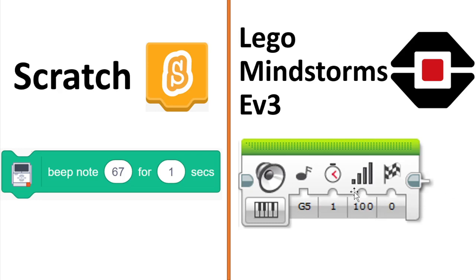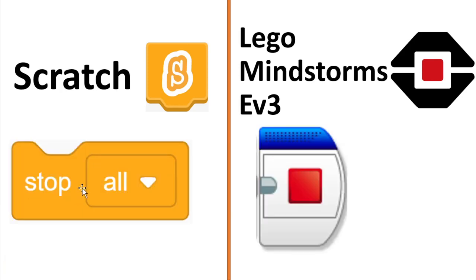My final example is the 'stop all' block on Scratch. You can use that in Control and just drag 'stop all' to the end of a script. In the LEGO Mindstorms EV3 app it's very similar — you drag a block to the end of the script and it will just stop everything. One difference is that in Scratch blocks move from top to bottom, but in the LEGO Mindstorms EV3 app it moves from left to right.